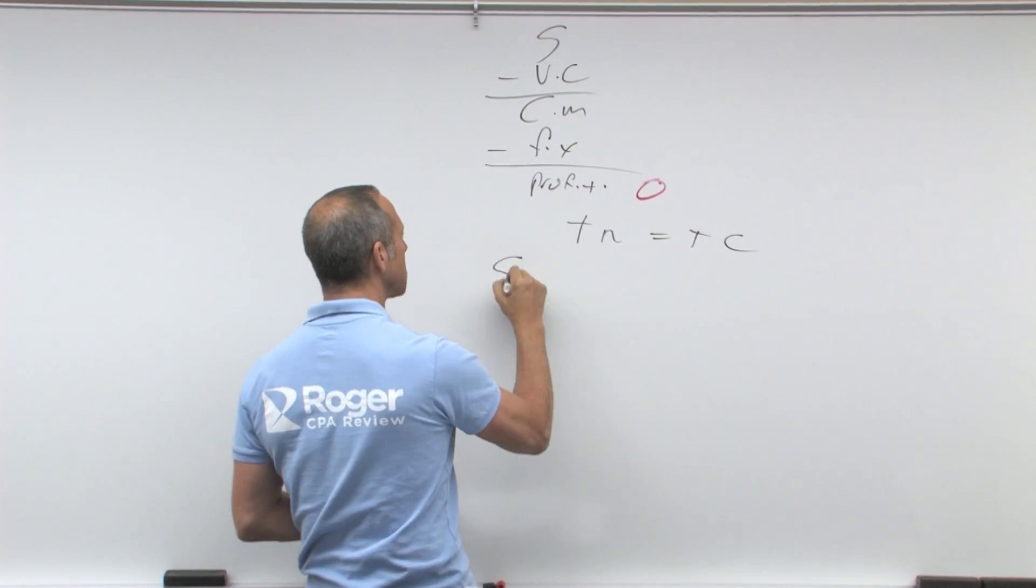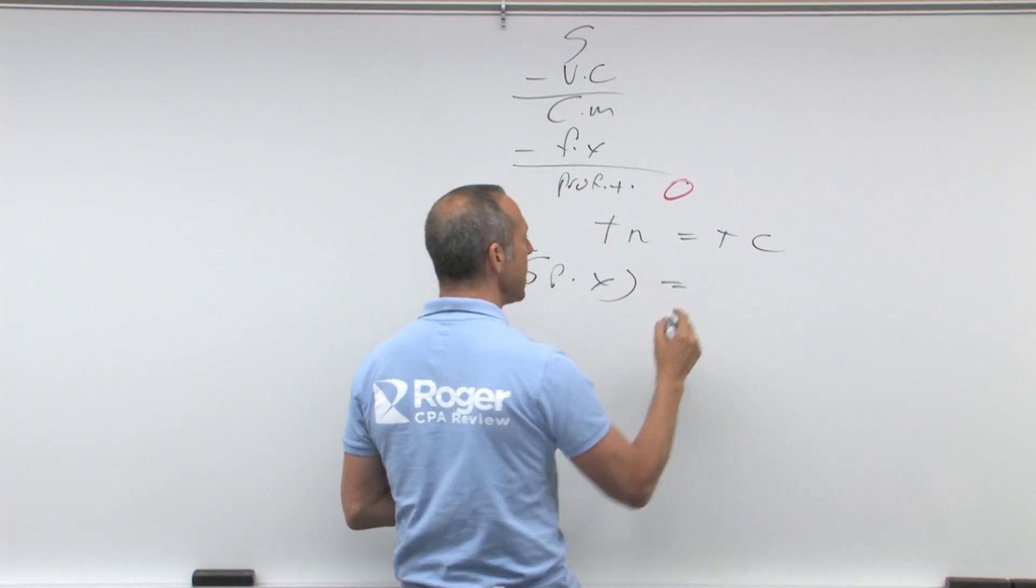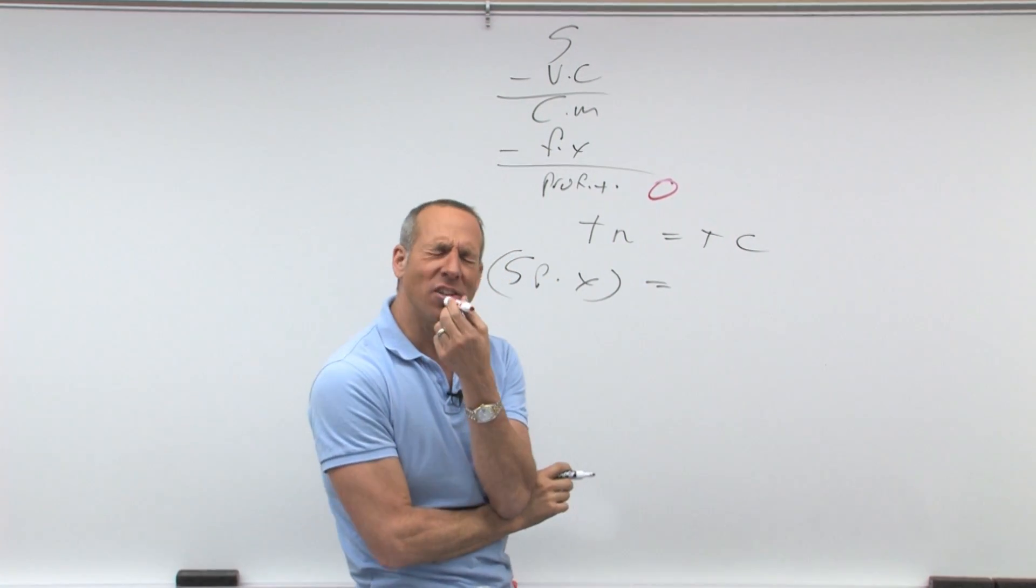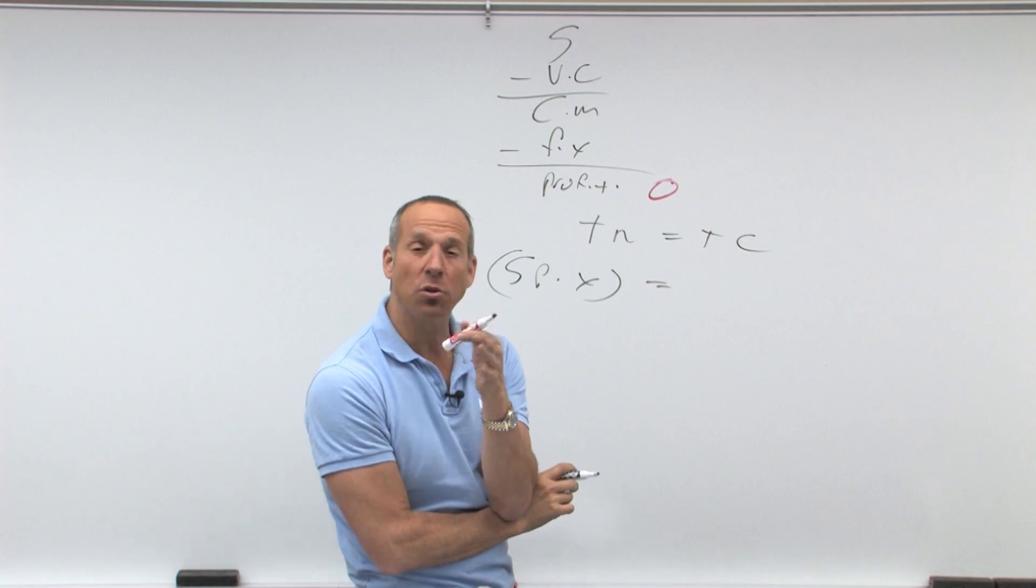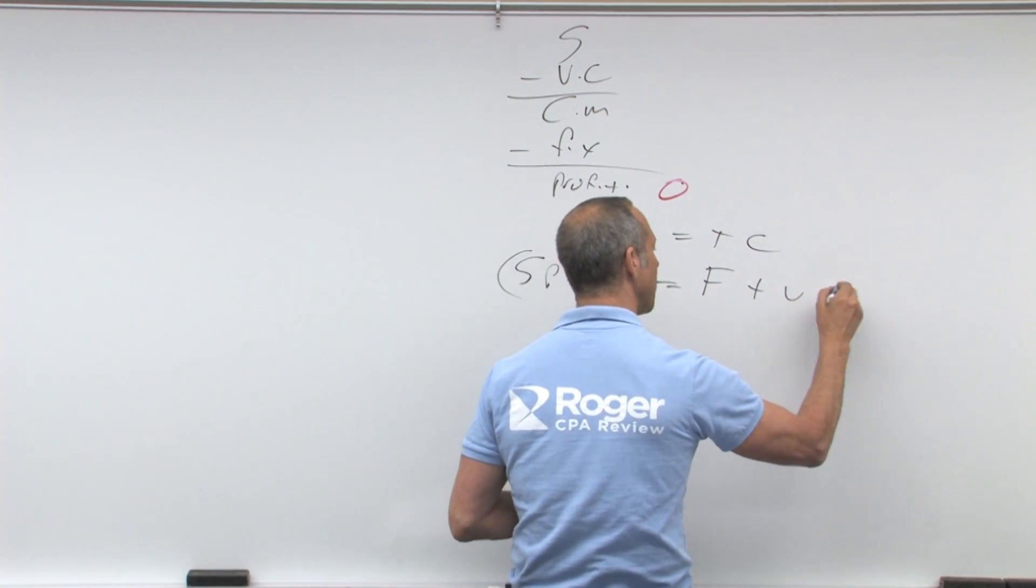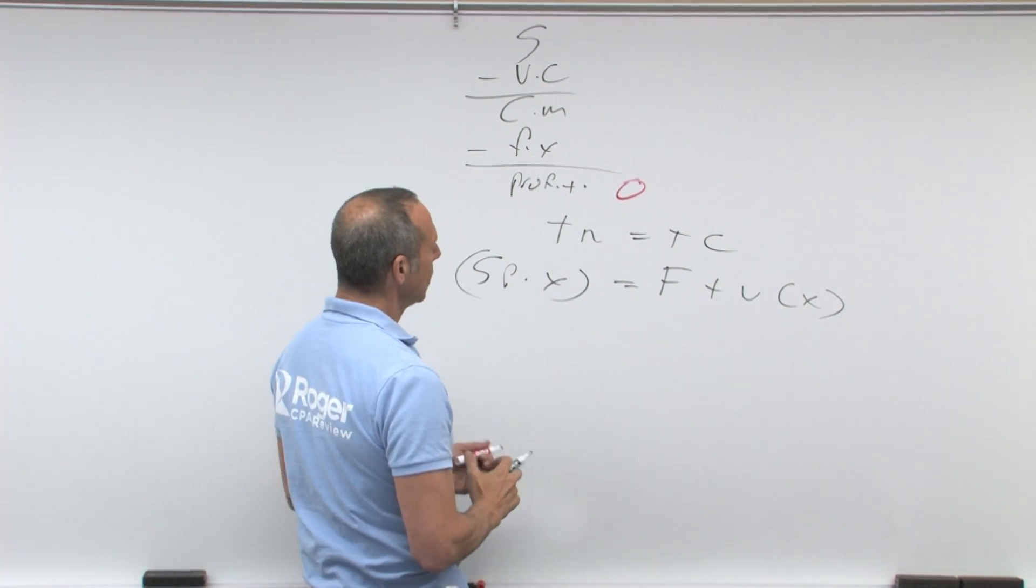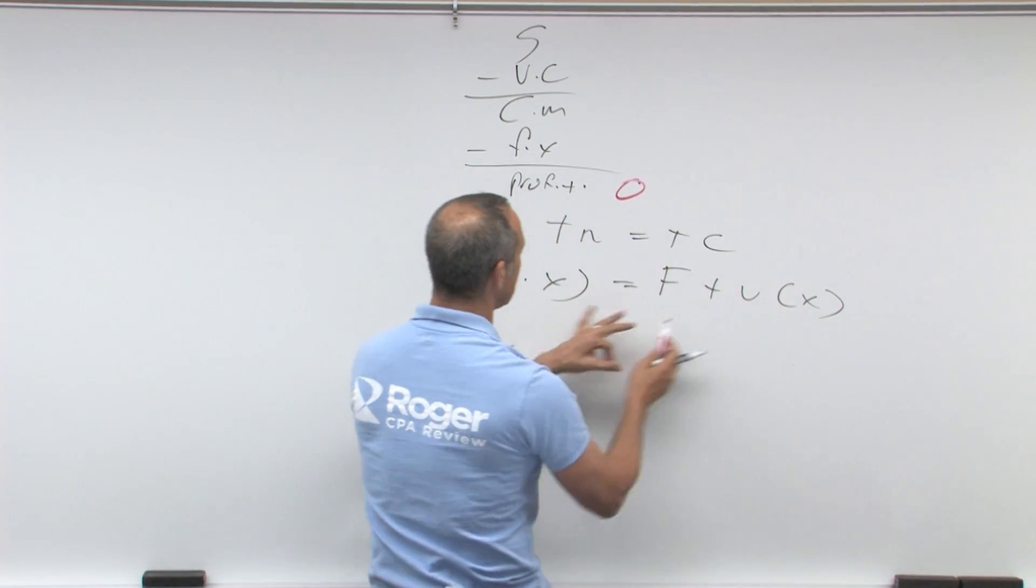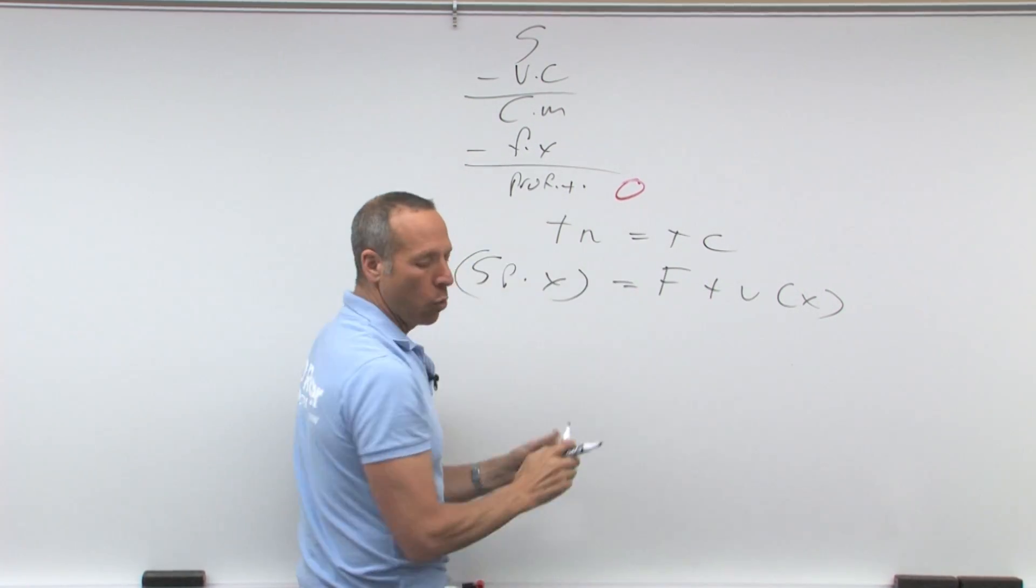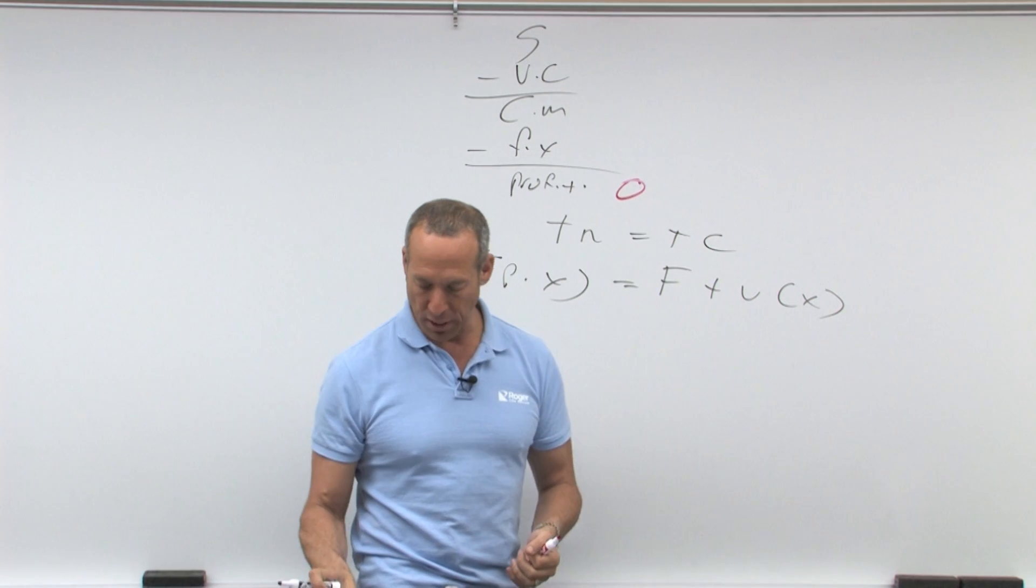What's total revenue? How about sales price times X, which is the number of units you sold, equals, what's total cost? Let's see. Total cost, it was fixed plus variable times X. Yeah, that's right, fixed plus variable times X. So let's divide through, bring this over, come over here, bring the fixed.